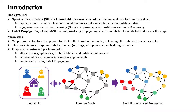Here, graphs are constructed per household. The utterances from the household are constructed as the graph nodes, including both labeled and unlabeled utterances, and the pairwise utterance similarity scores are constructed as edge weights. Then label propagation methods are used to propagate the speaker labels over the graph and optimize a global consistent loss function.